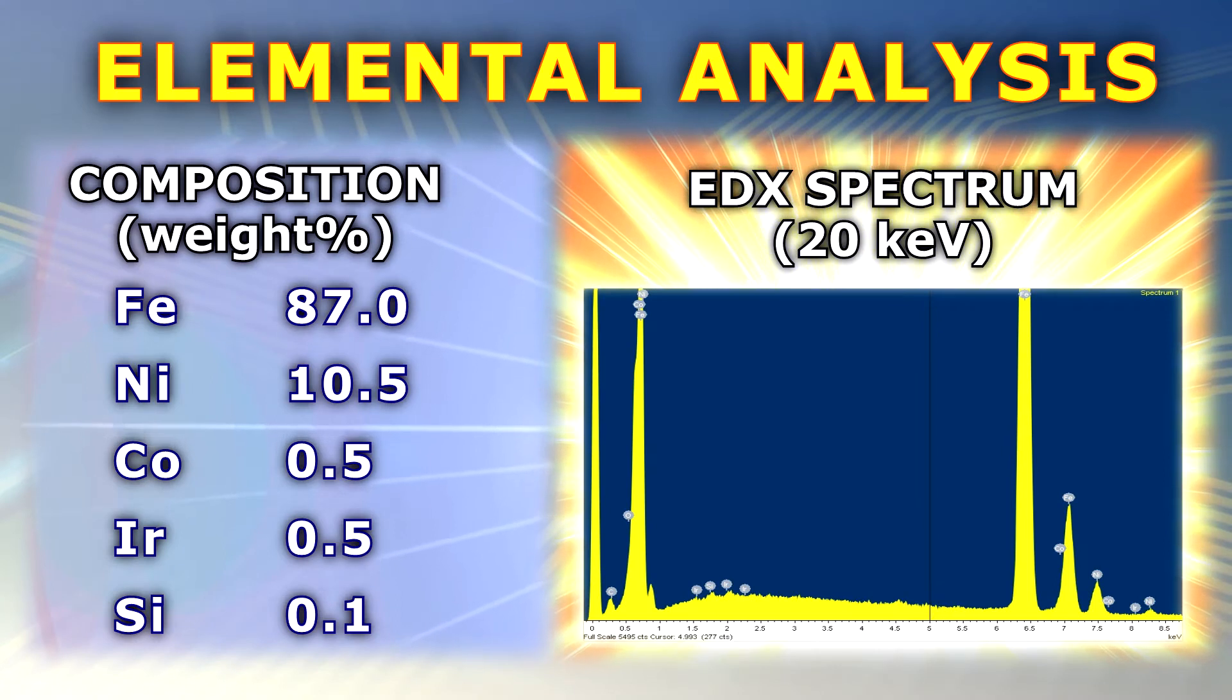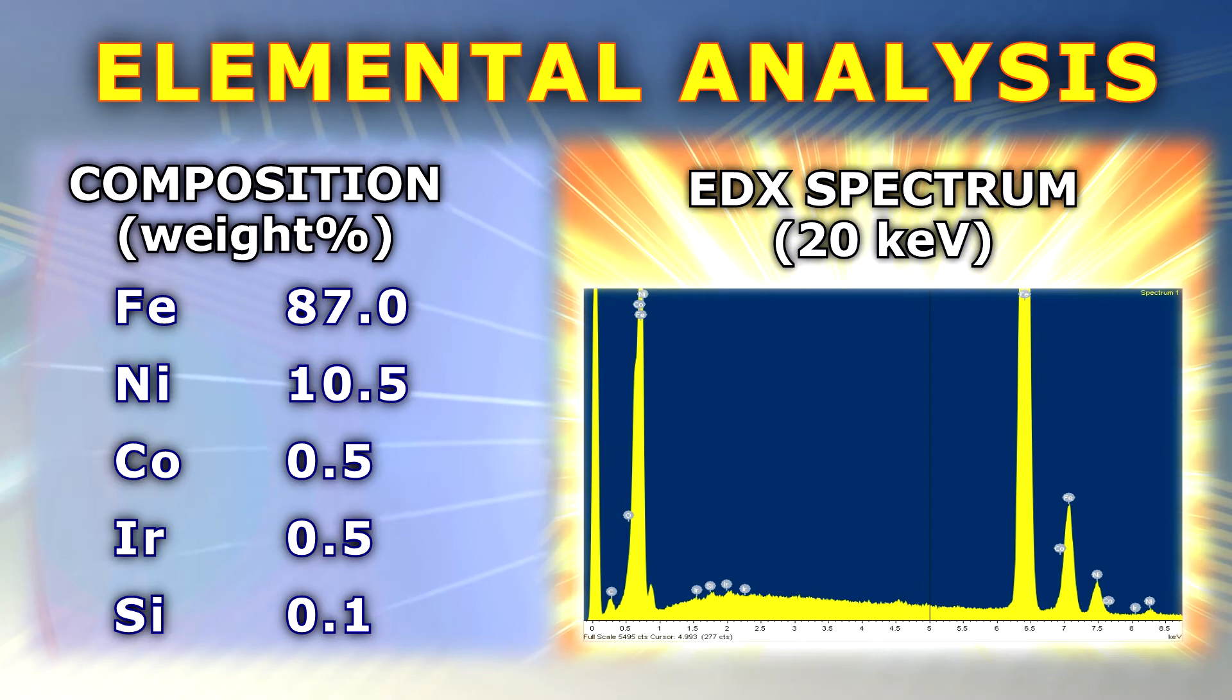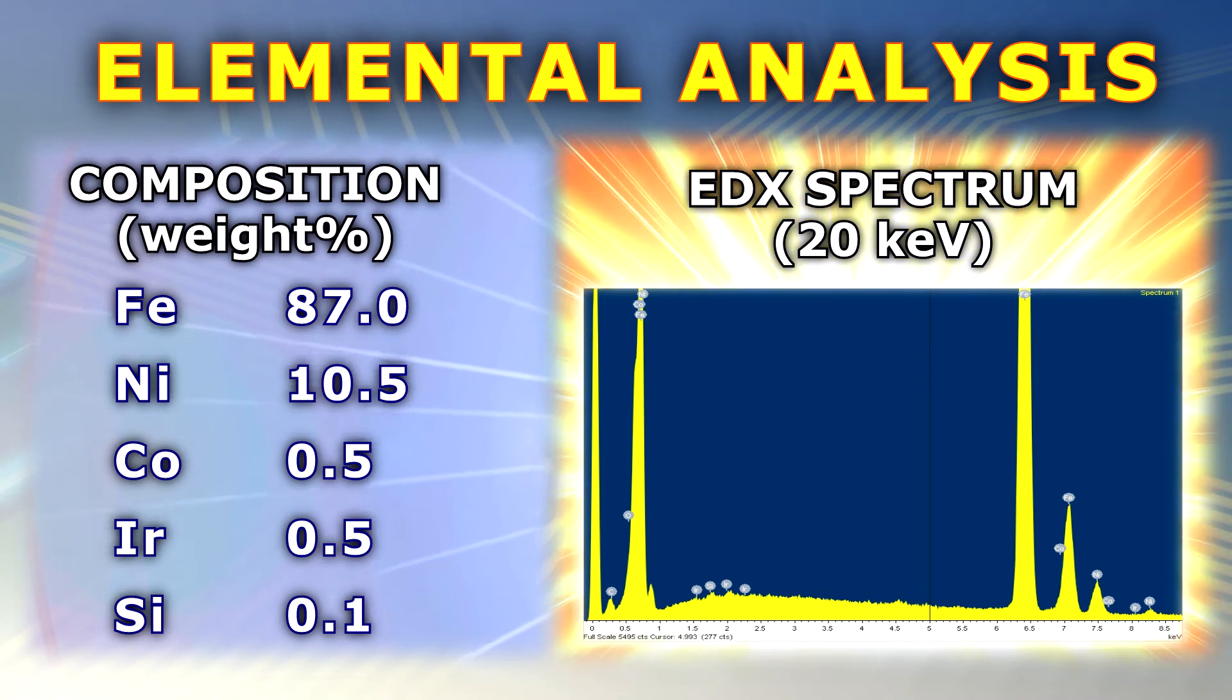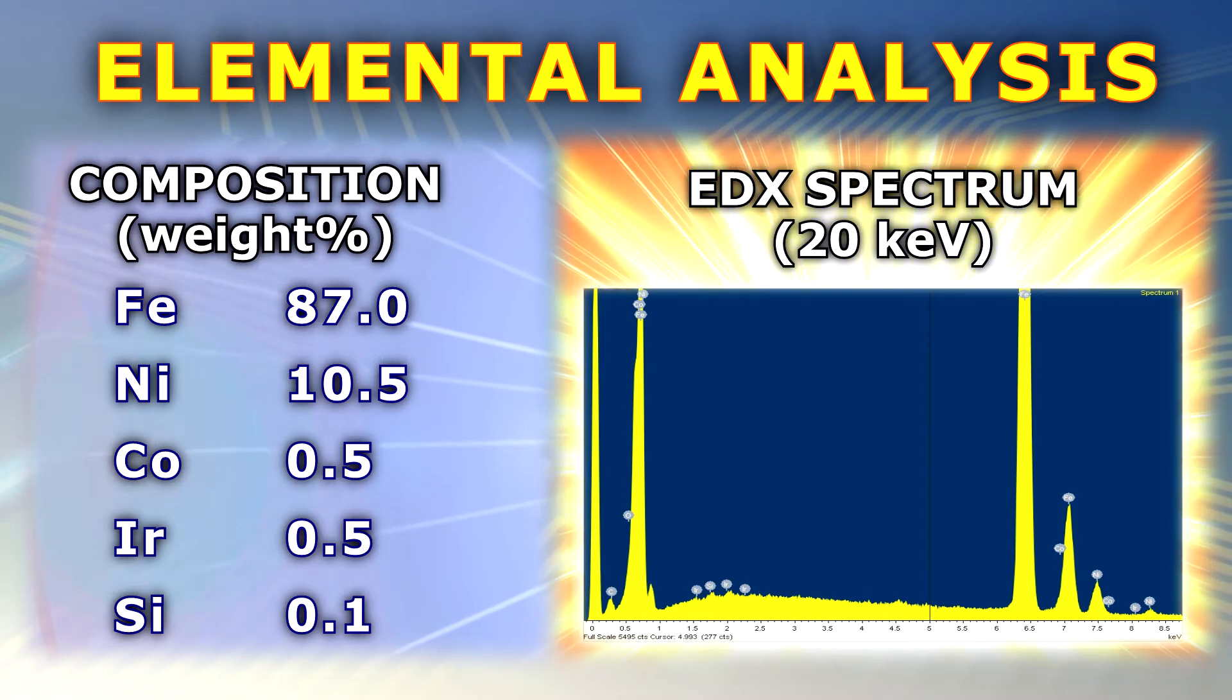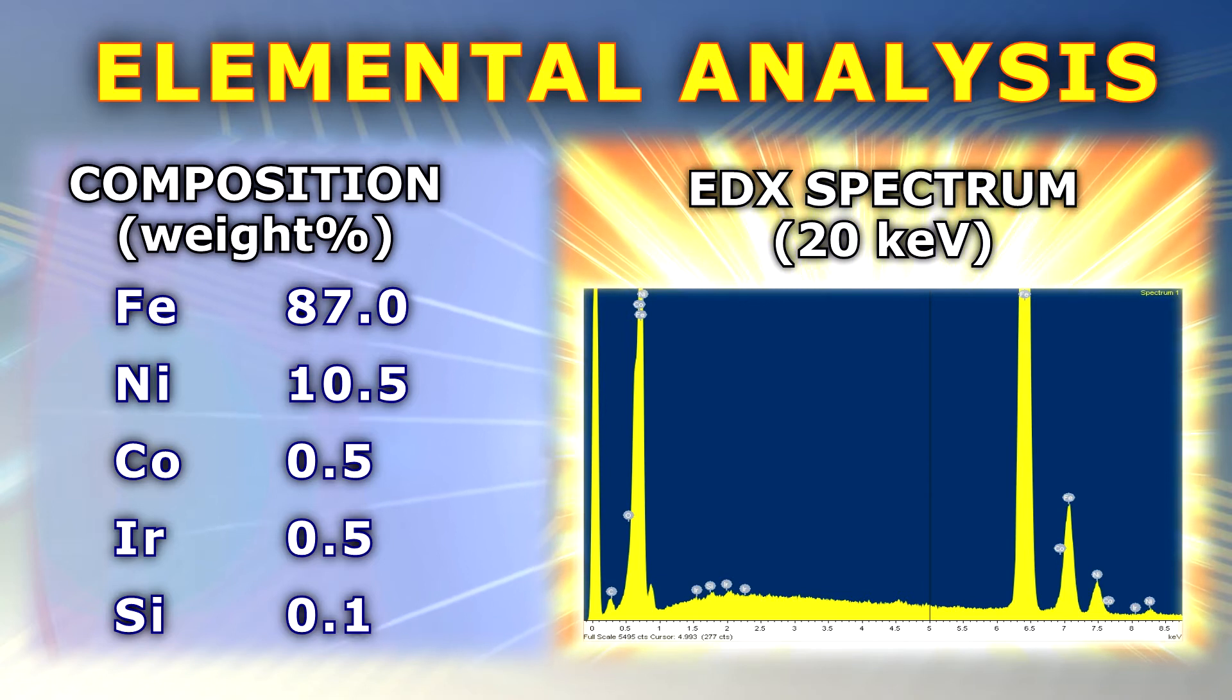As you can see, our current sample is metallic and consists mostly of iron and nickel, which means that it is a fairly common meteorite. To our big surprise, the analysis program also shows a small amount of iridium.